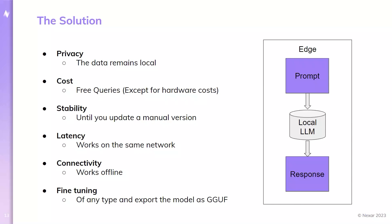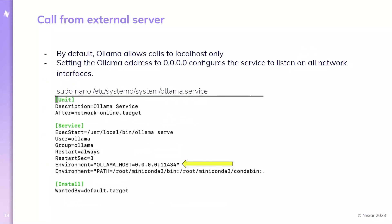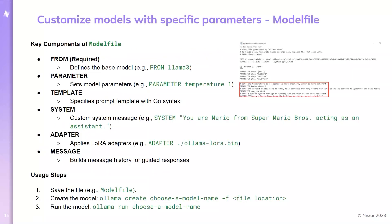I can also fine-tune the model in whatever way I want. By the end, I export the model to GGUF format — this is the llama.cpp format that Ollama expects. One more technical point: when we install Ollama, by default the model listens only to communication from localhost. If you want to call it from outside servers, you just need to add one line, and that tells Ollama to listen to communication from outside.